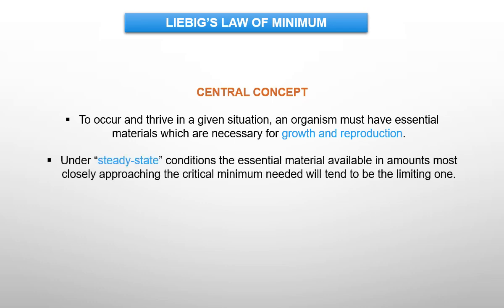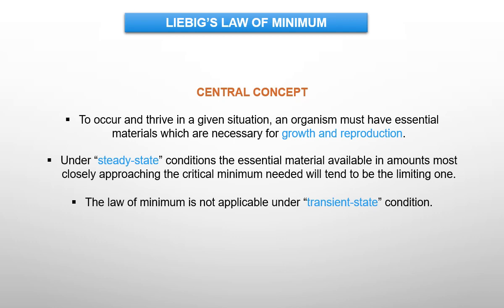Under steady conditions, the essential material available in amounts most closely approaching the critical minimum needed will tend to be the limiting one. In steady conditions, the component which the organism utilizes most will tend to become limiting. The Law of Minimum is not applicable under transient state conditions, when the amount and effect of many constituents rapidly change. The scientific application of Liebig's Law of Minimum is extended to ecosystem models and populations.